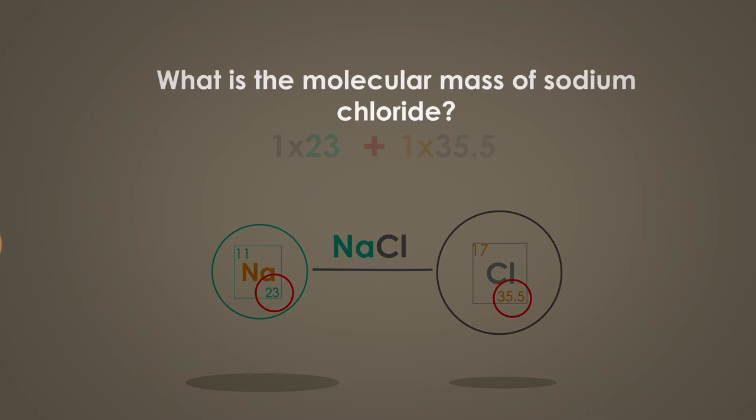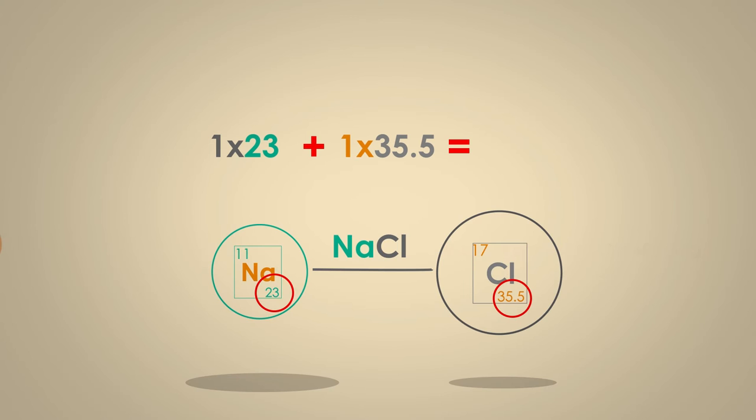What is the molecular mass of sodium chloride? Pause the video whilst you work it out. The molecular mass of sodium chloride is 58.5 grams per mole. Did you get that right? Don't forget your units!